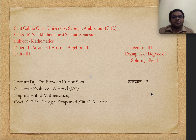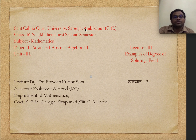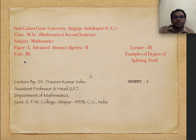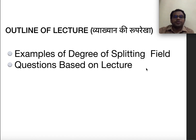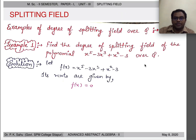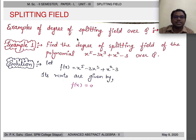Namaskar and a warm welcome to this series of lectures. I am Dr. Parin Kumar Sahu from Government Sarma Prasad Mukherjee College, Seetapur, Chhattisgarh, India. This lecture pertains to MSc Mathematics second semester of Sandh Gahiraguru University, Sarguja Ambikapur, Chhattisgarh. The paper is first paper, Advanced Abstract Algebra Part Two, Unit Three. This is my third lecture on Unit Three and the topic is examples of the degree of splitting field. We will discuss examples and questions based on the degree of splitting field over rationals. For details on what a splitting field is and what its degree means, please refer to lectures one and two.